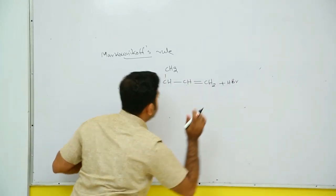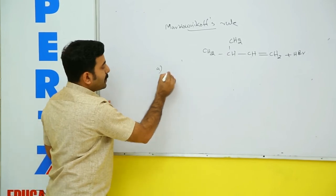We can go through some options: Option A is CH3-CH(CH3)-CHBr-CH3; Option B is CH3-C(CH3)(Br)-CH2-CH3; Option C is CH3-CH(CH3)-CH2-CH2Br; and for convenience Option D is none of these.